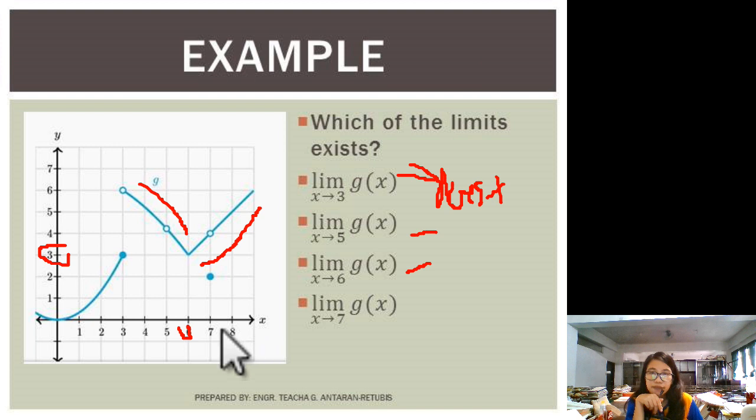And for the 7. This is 7, class. This one. So as we approach 7, this one, the value is 4. And from the left, it is also 4. So therefore, these 3 choices, as your x approaches 5, 6, and 7, we can say that their limits exist. Okay? I hope that you get it, class.